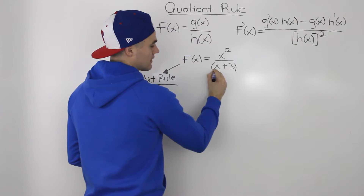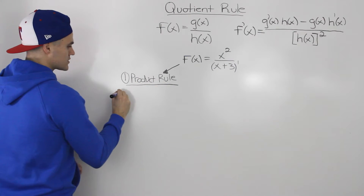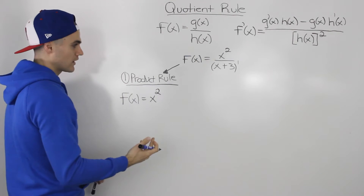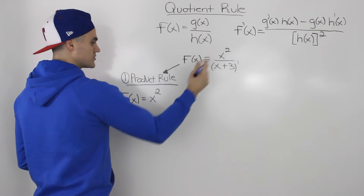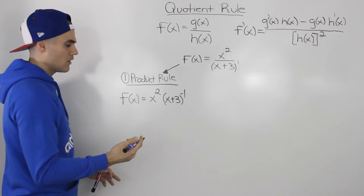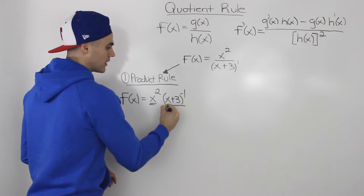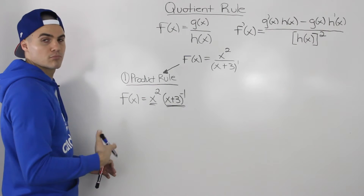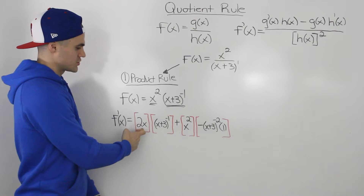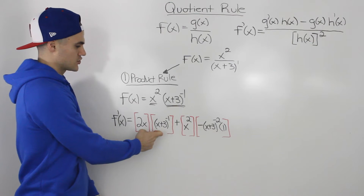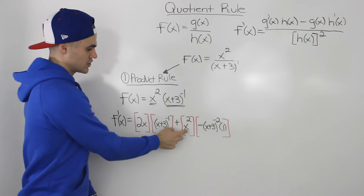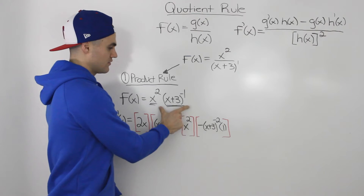For example, this x plus 3 is to the power of 1. So we can rewrite this function as x squared times x plus 3 to the power of negative 1. Because this is now two functions multiplied together, we can apply the product rule. We take the derivative of the first function, x squared, which is 2x, times the second function as is, plus the first function x squared times the derivative of the second function.